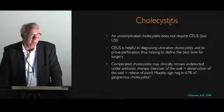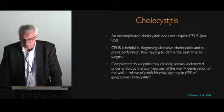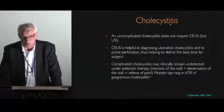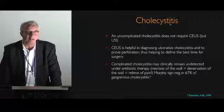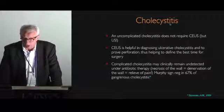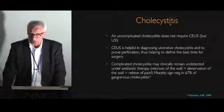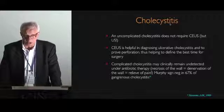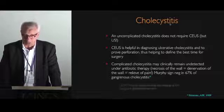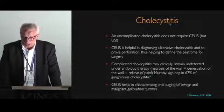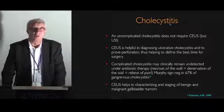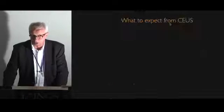You have to keep in mind that when you have necrosis of the wall, that also means you have denervation of the wall and relief of pain. The Murphy sign has been reported to be negative in more than 60% of gangrenous cholecystitis. And of course, CEUS helps in characterizing and staging benign and malignant gallbladder tumors — that will be the last point in my talk.